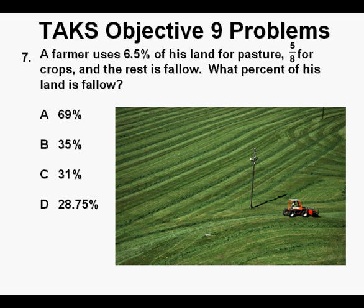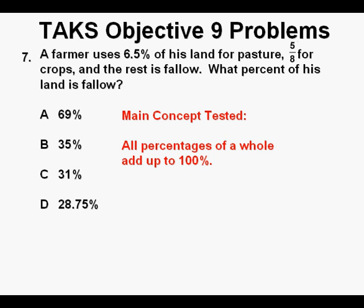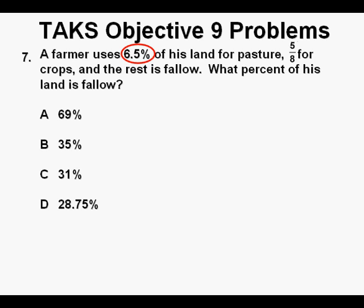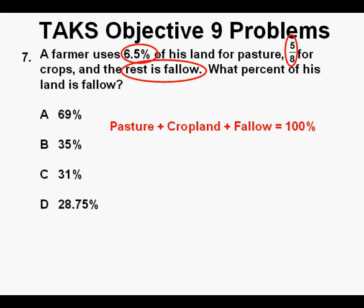Problem 7. A farmer uses 6.5% of his land for pasture, 5 eighths for crops, and the rest is fallow. What percent of his land is fallow? We need to understand that percentages of a whole add to 100%, and we need to convert fractions into percentages. We have 6.5% for pasture and 5 eighths for crops. The pasture land plus cropland plus fallow land add to 100%. So we set up the equation: 6.5% plus 5 eighths plus F equals 100%, where F stands for fallow.